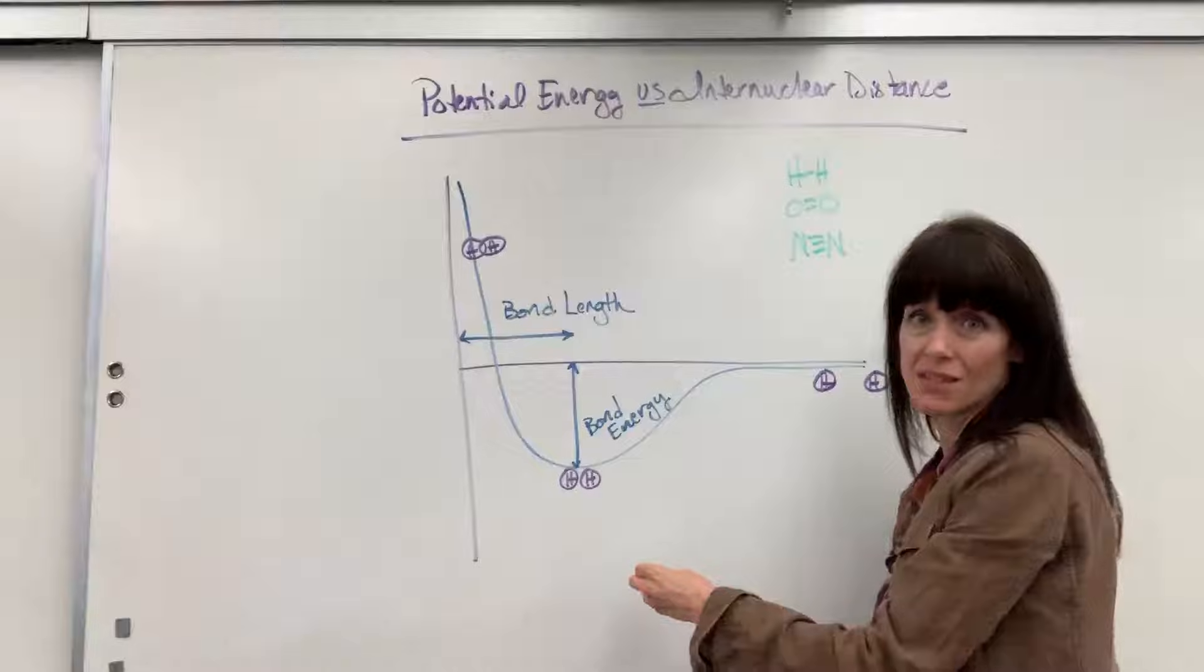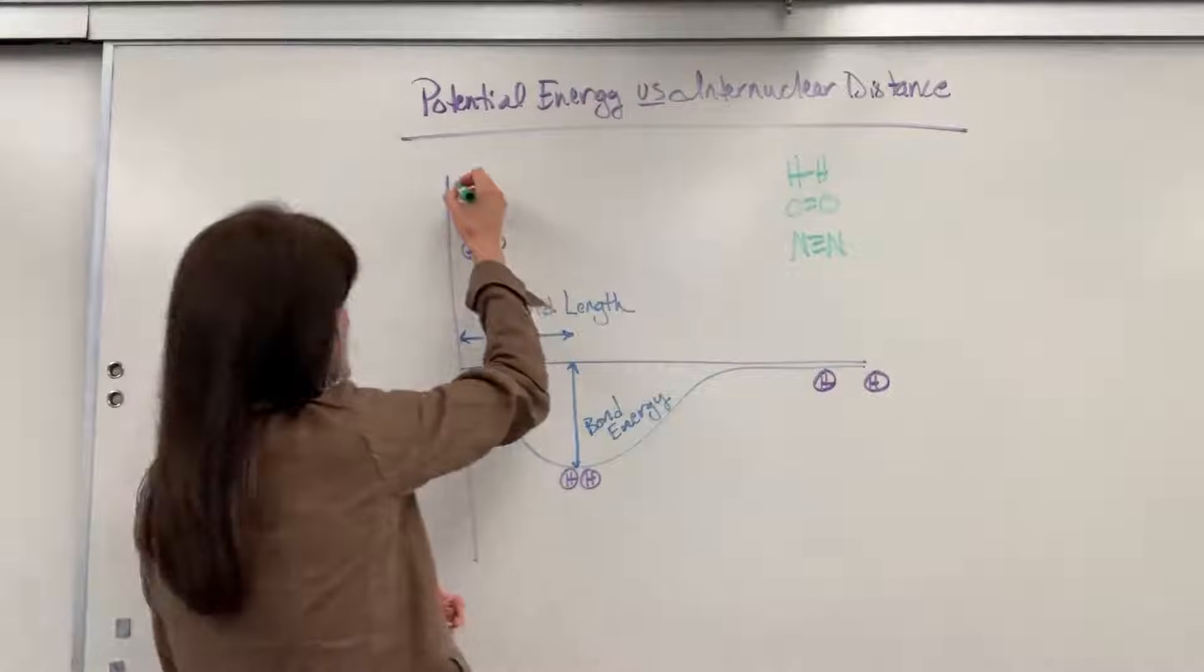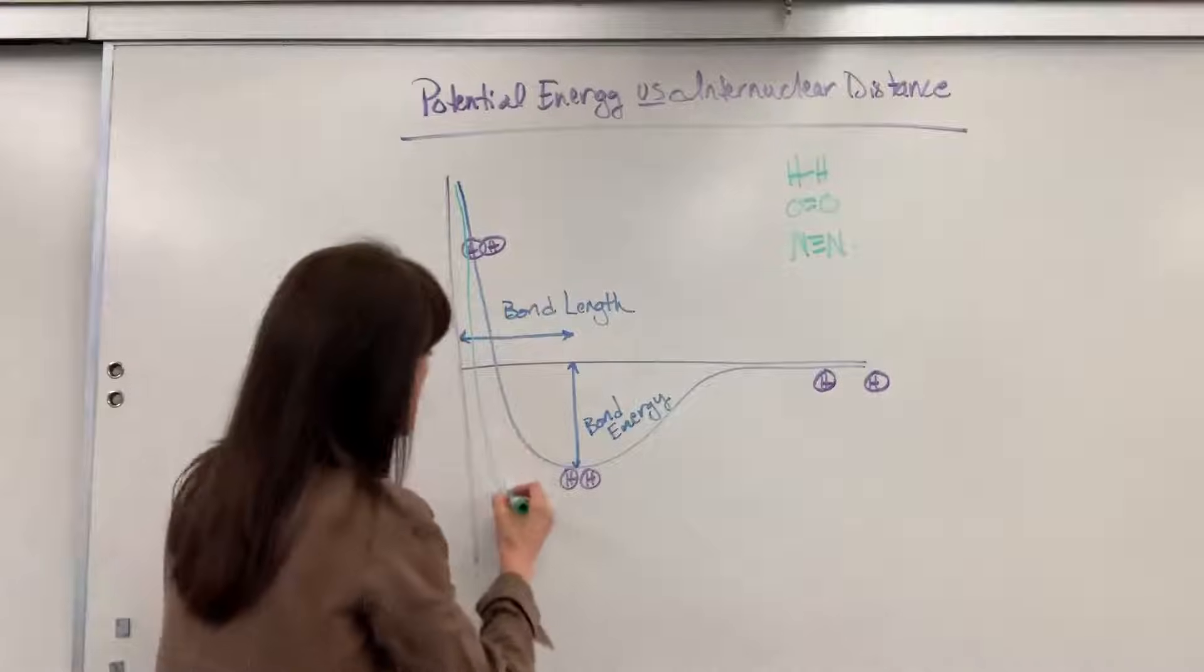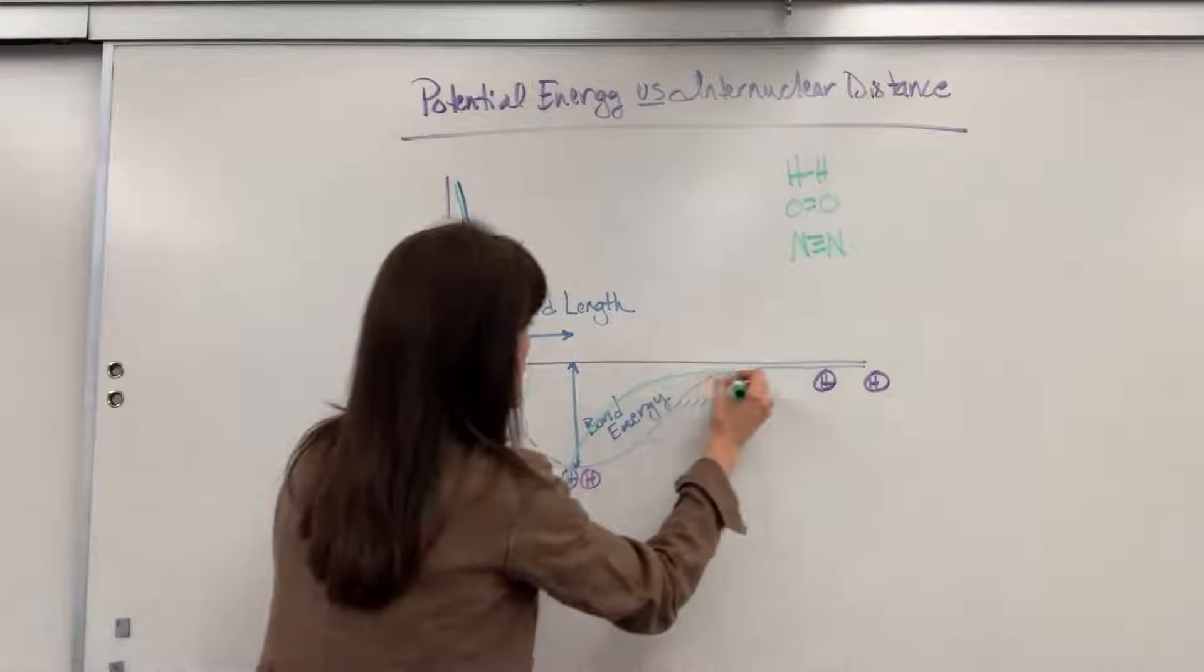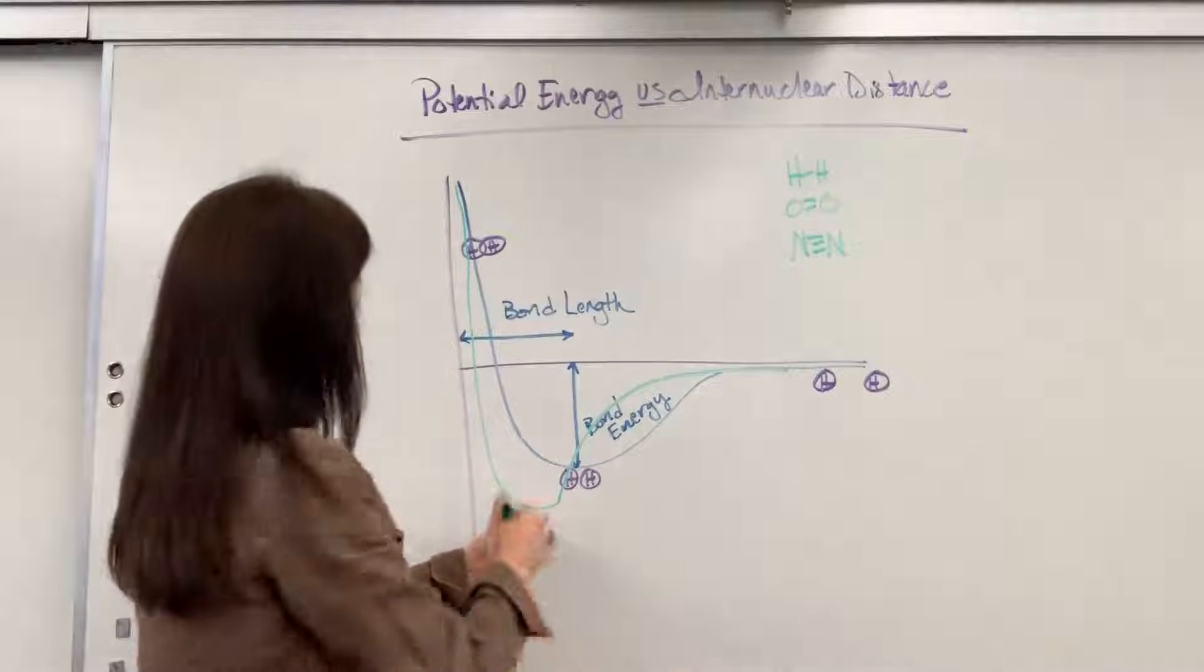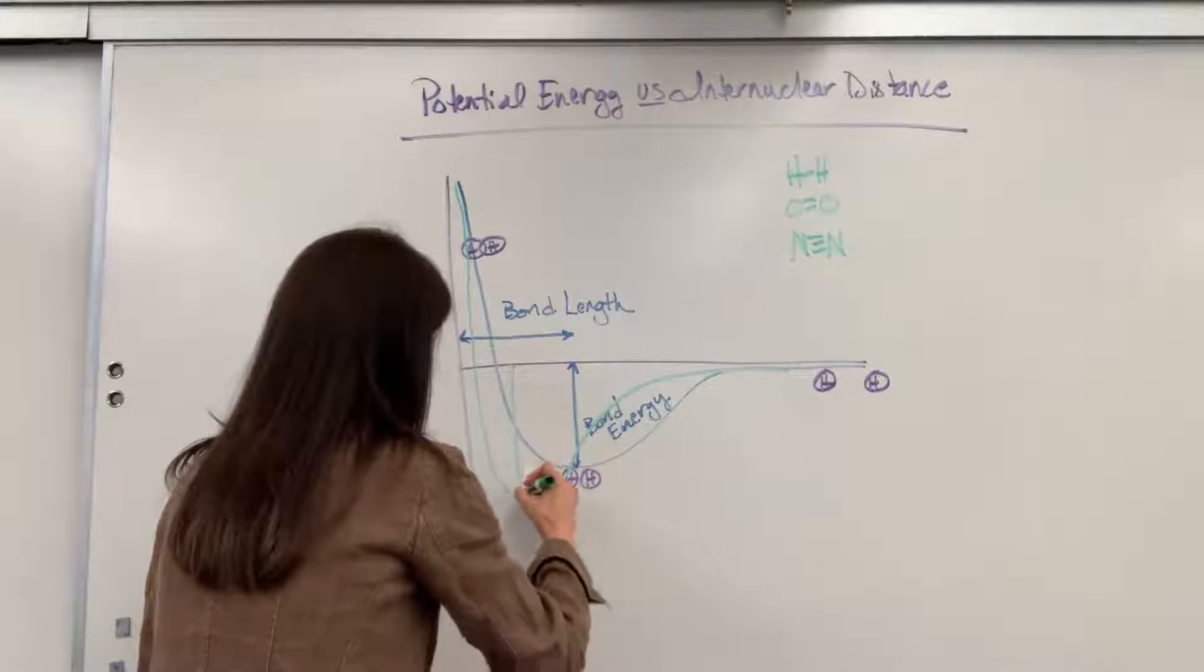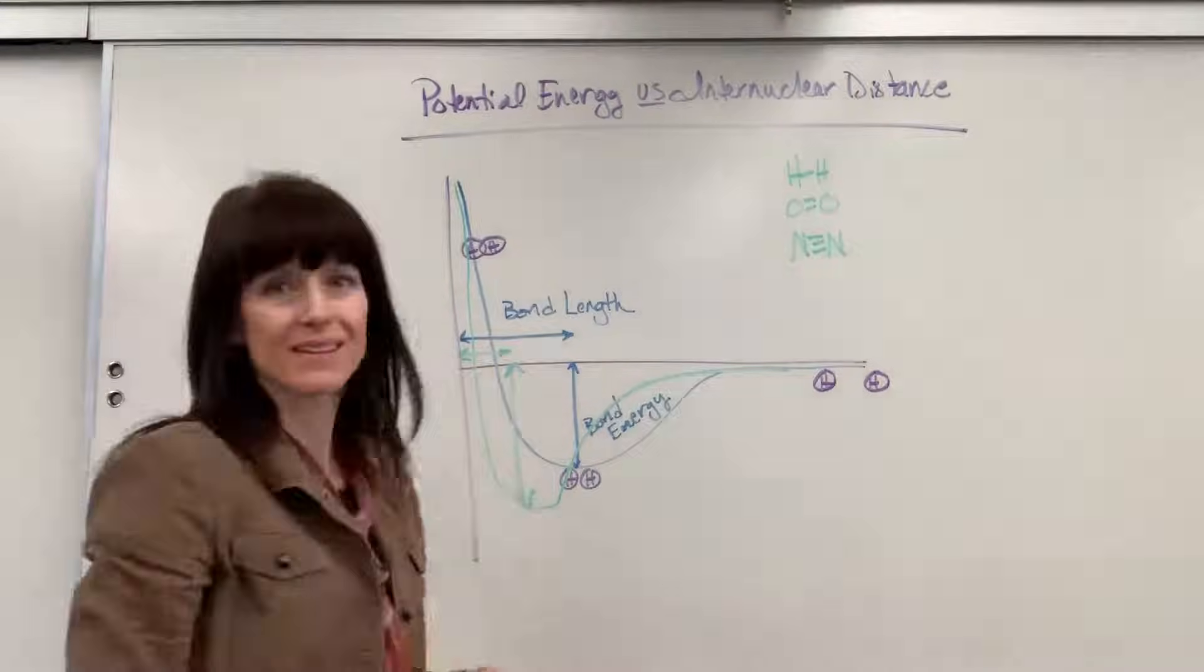So how does that change this right here? Well, let's do green for our nitrogen. It's going to be a little bit smaller, and it's stronger. So it goes down further. So it's going to have a greater strength and a shorter length, like that.